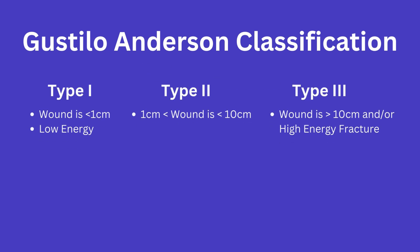There are three major categories. Type 1 is when the wound is less than one centimeter across and is often associated with a low energy mechanism. Type 2 is when the wound is anywhere between 1 and 10 centimeters. And finally, Type 3 is going to be greater than 10 centimeters and/or is associated with a high energy traumatic fracture.